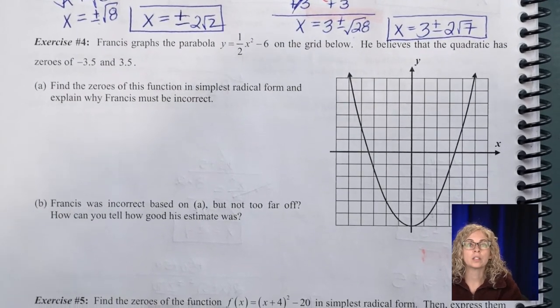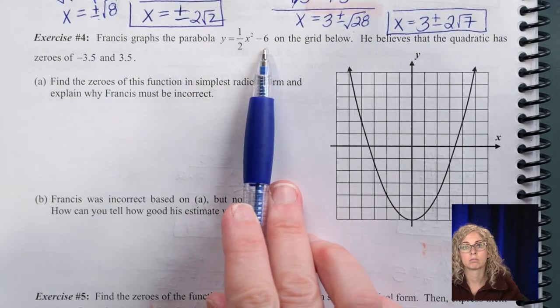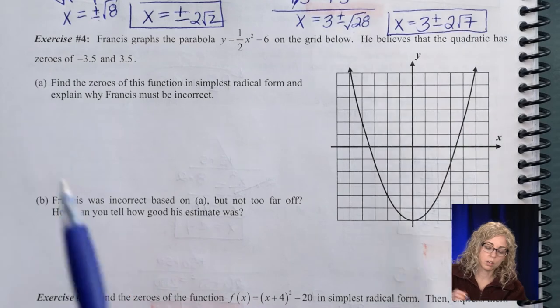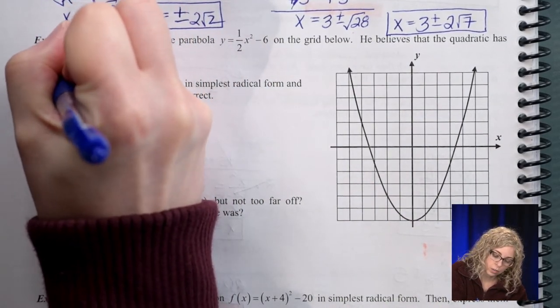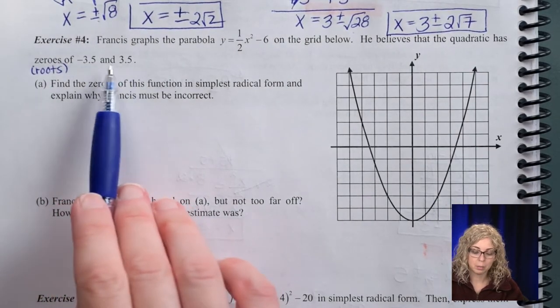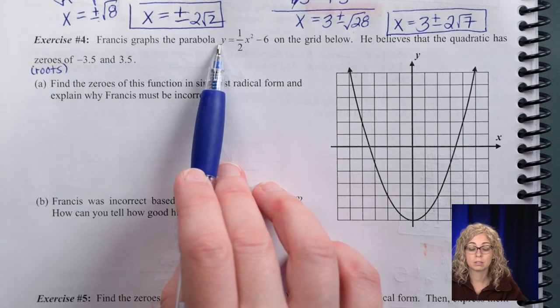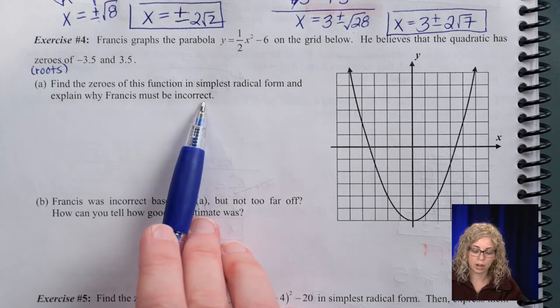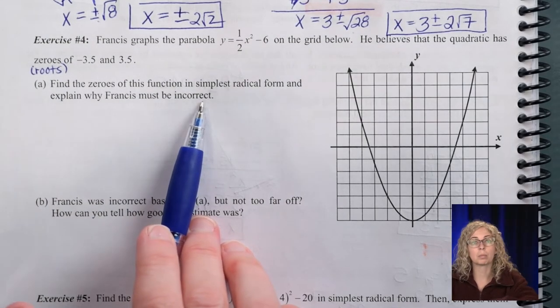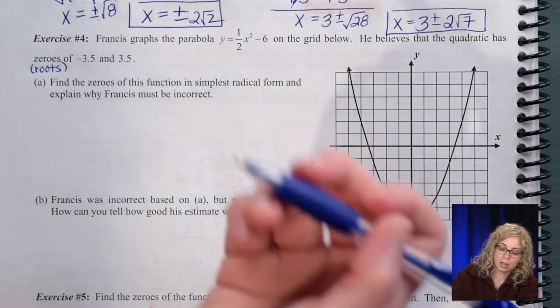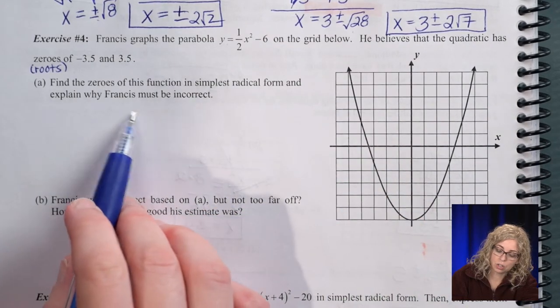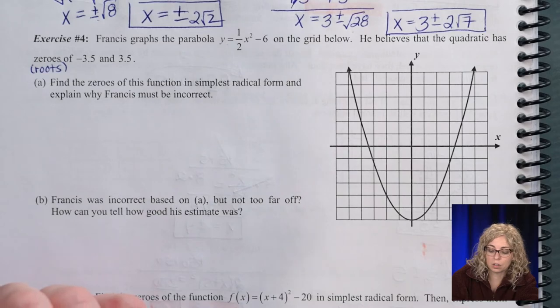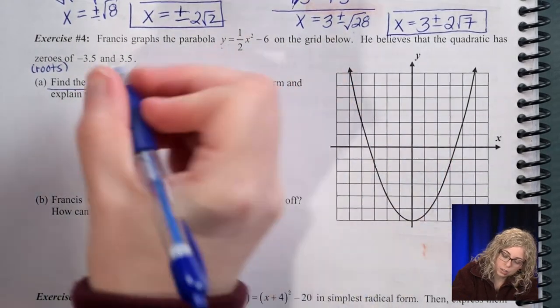So, number 4. Francis graphs the parabola y equals 1 half x squared minus 6. It's on the grid below. He believes that the quadratic has roots or zeros. Remember, another word for zeros is also roots. Okay, these are the answers that when we plug them in, right, for x, we should get 0 for y. That's why we call them zeros. Find the zeros of this function's simplest radical form and explain why Francis must be incorrect. So, the way we find the zeros is replace the y with 0.